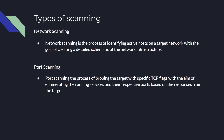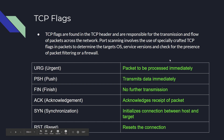Now that we have an understanding of the types of scanning, we can take a look at the various TCP flags. TCP flags are typically found in the TCP header and are responsible for the transmission and flow of packets across the network — they control how data is transmitted and processed. Port scanning involves the use of specially crafted TCP flags in packets, used to determine the target operating system, service versions, and to check for the presence of packet filtering or a firewall. It's important that we understand each of these TCP flags so that when we're typing out the scans, we know why we're typing them and what their purpose is.